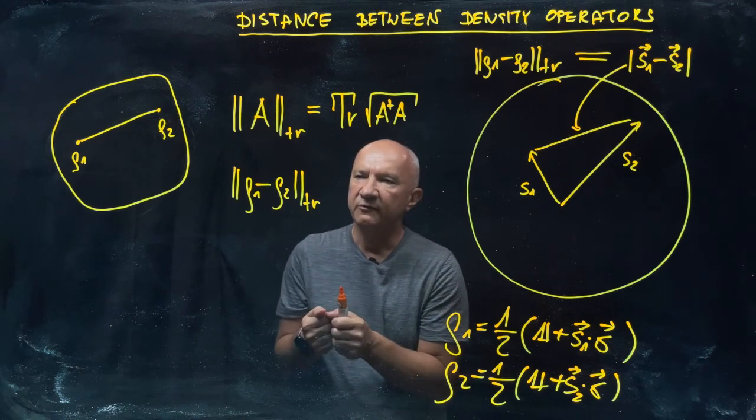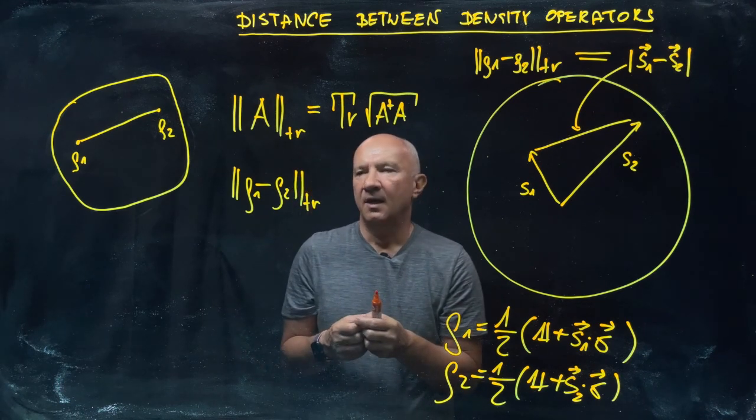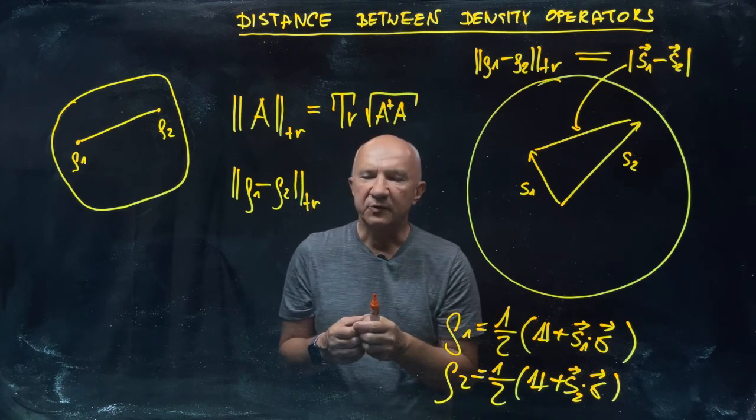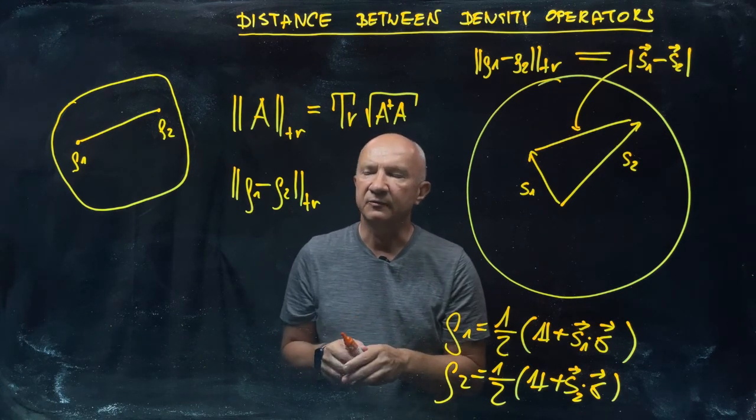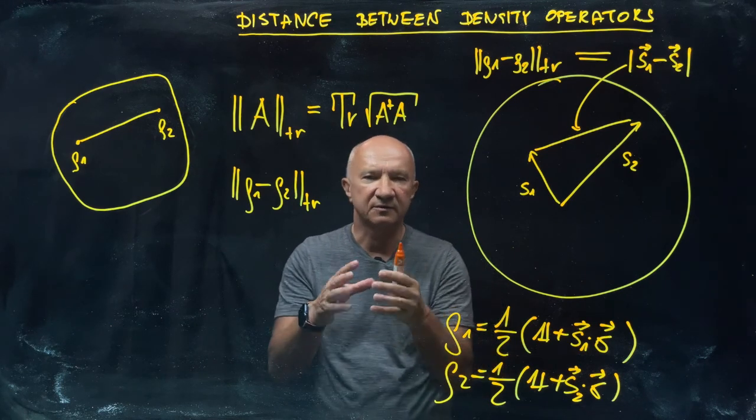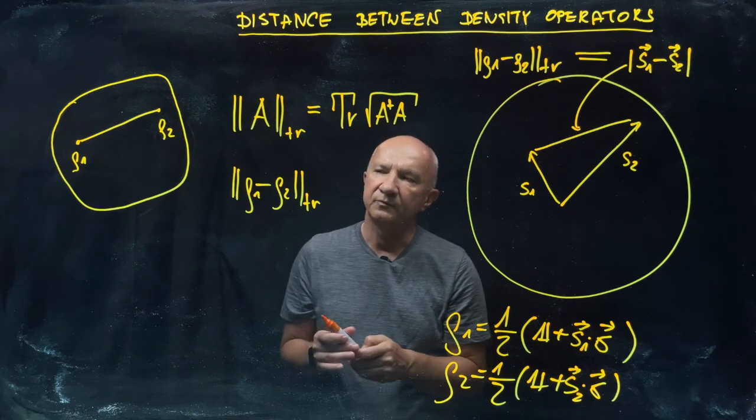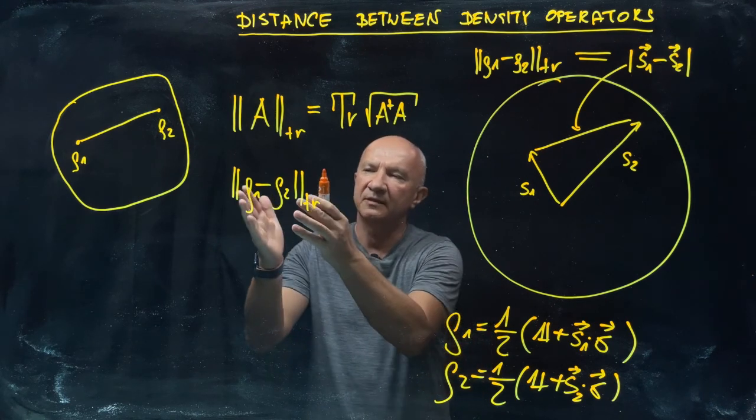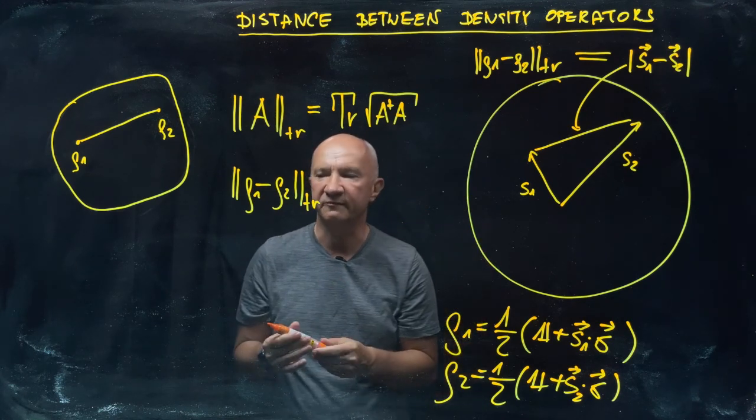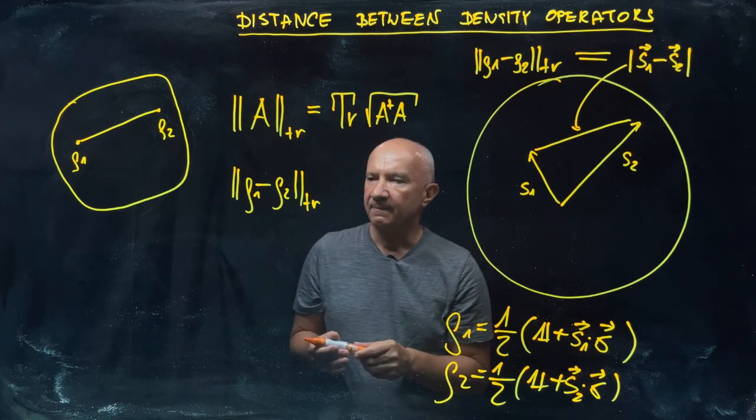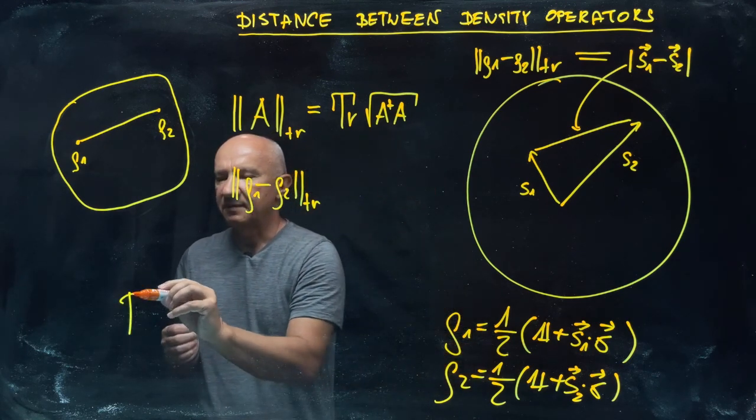The generalization of this to the quantum case is associated with the fact that we find it useful when we try to distinguish between quantum states described by two density operators. In fact, if I give you a qubit or any quantum system and tell you it's prepared either in state ρ₁ or state ρ₂, equally likely, and ask you to construct a good measurement to distinguish between the two.